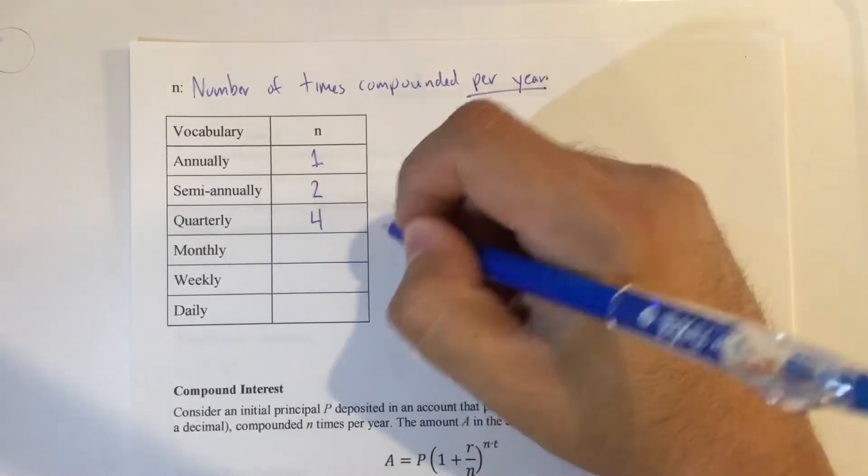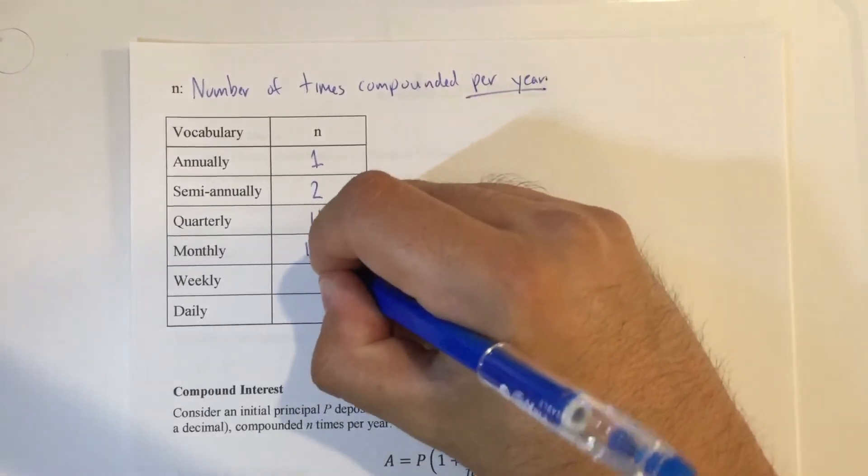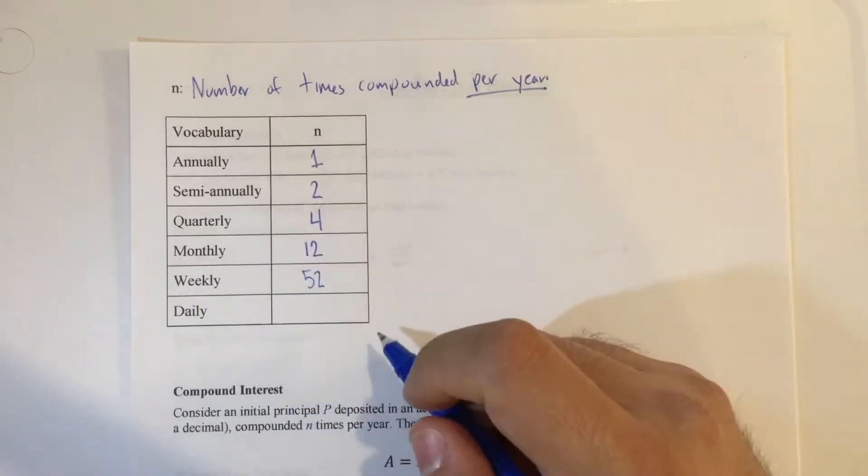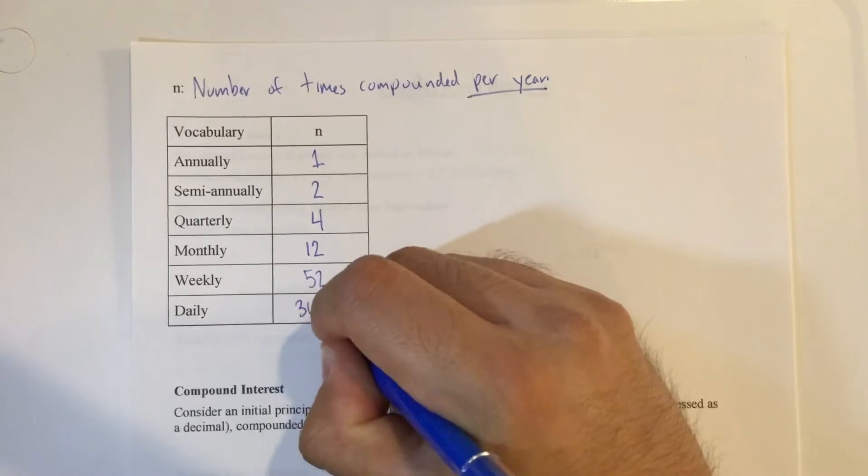Quarterly, there are four quarters in a year. Monthly, there are 12 months. Weekly, there are 52 weeks in a year. And last, we have daily, which is 365 days in a year.